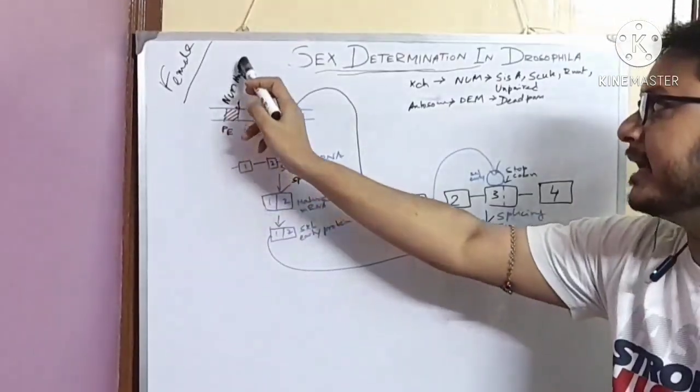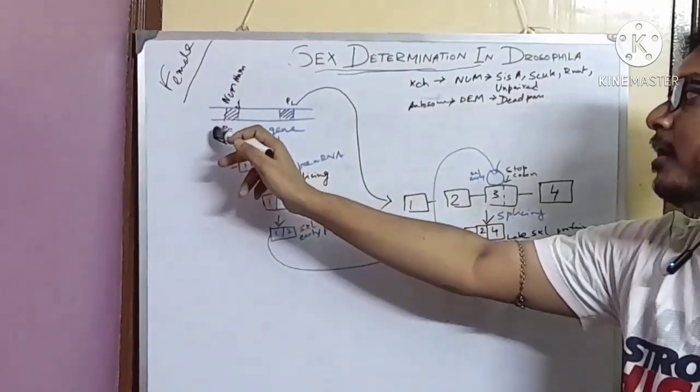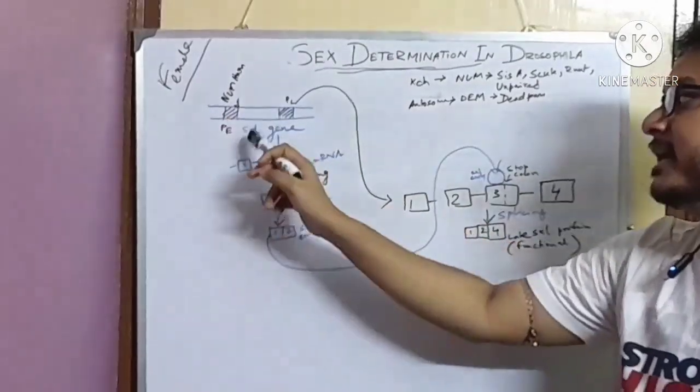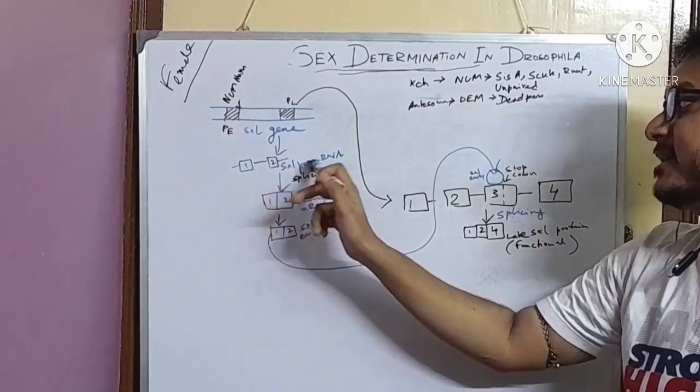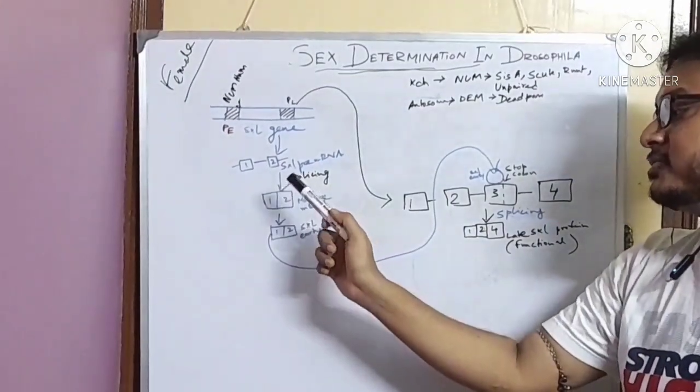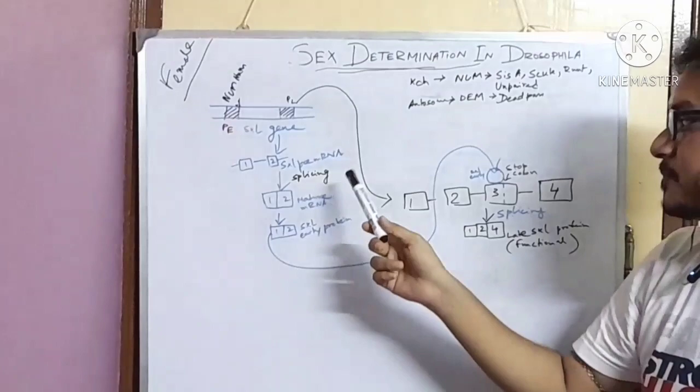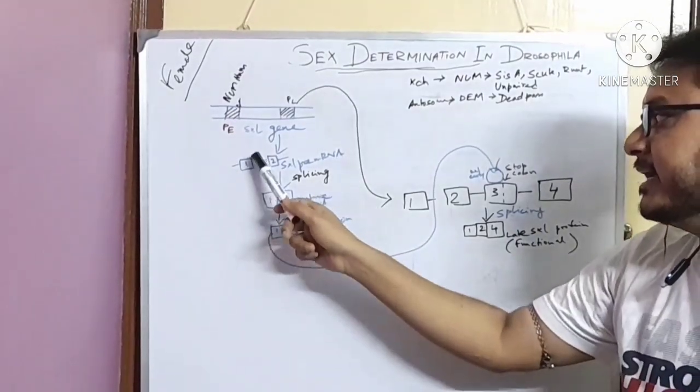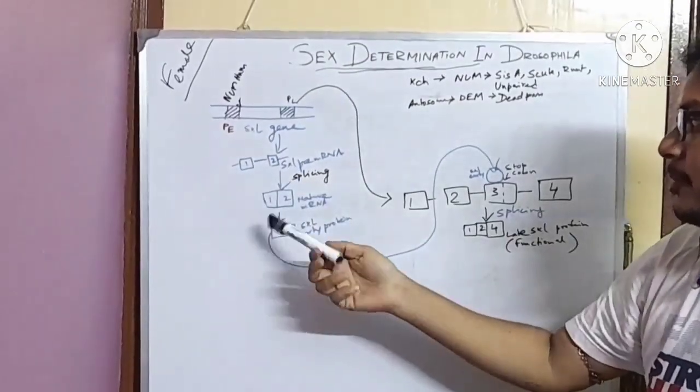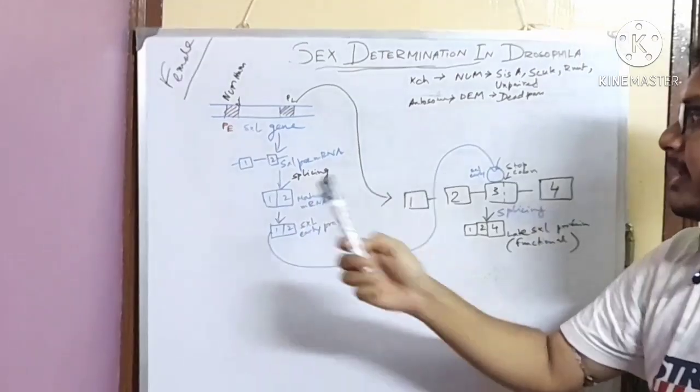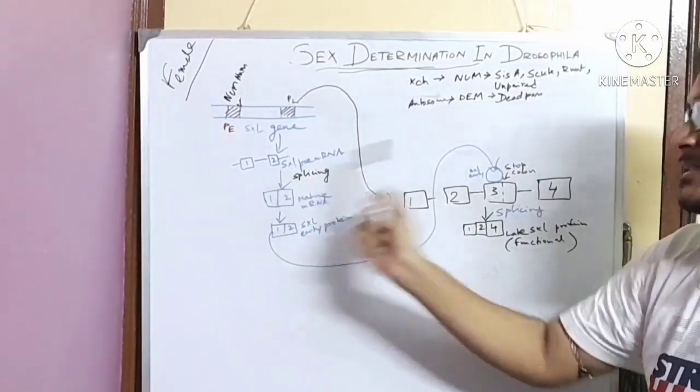After the binding of numerator complex to the promoter early region of the SXL gene, the SXL pre-mRNA is produced. After that, through alternative splicing, the introns are cut and produce the mature mRNA, SXL mRNA.